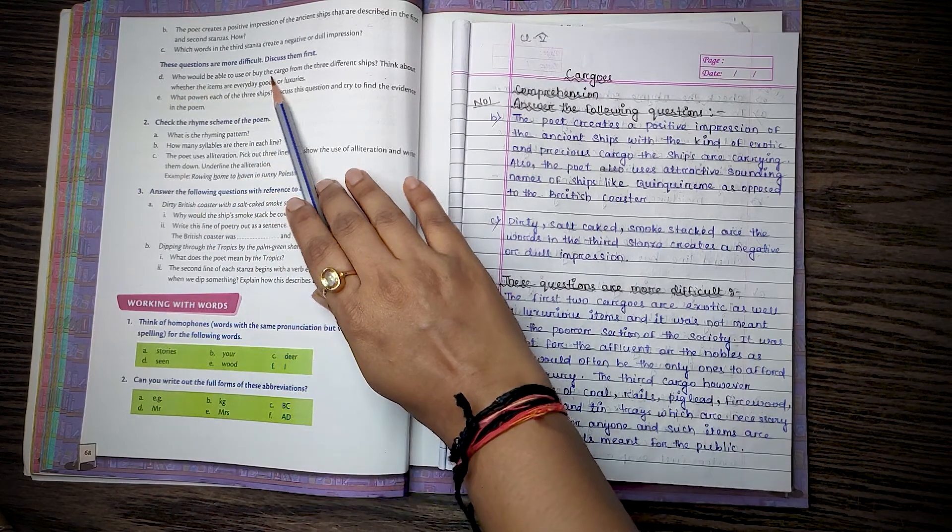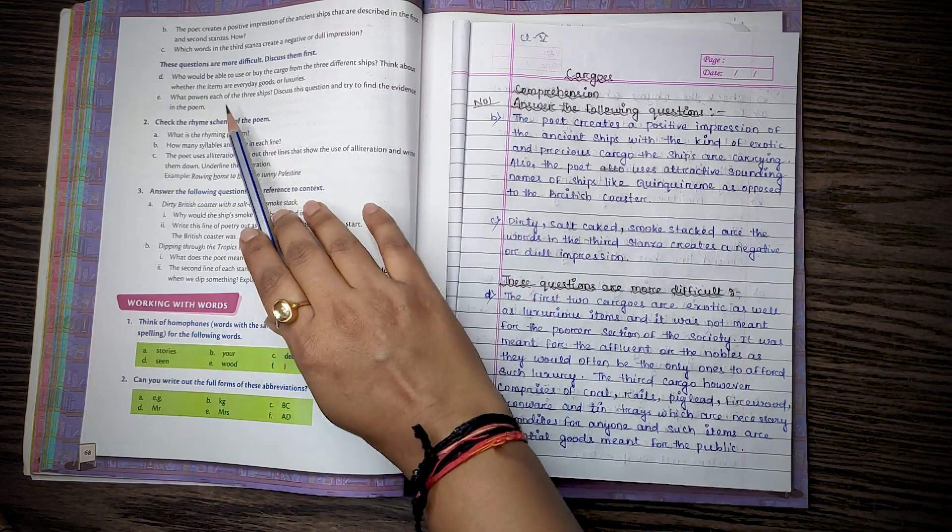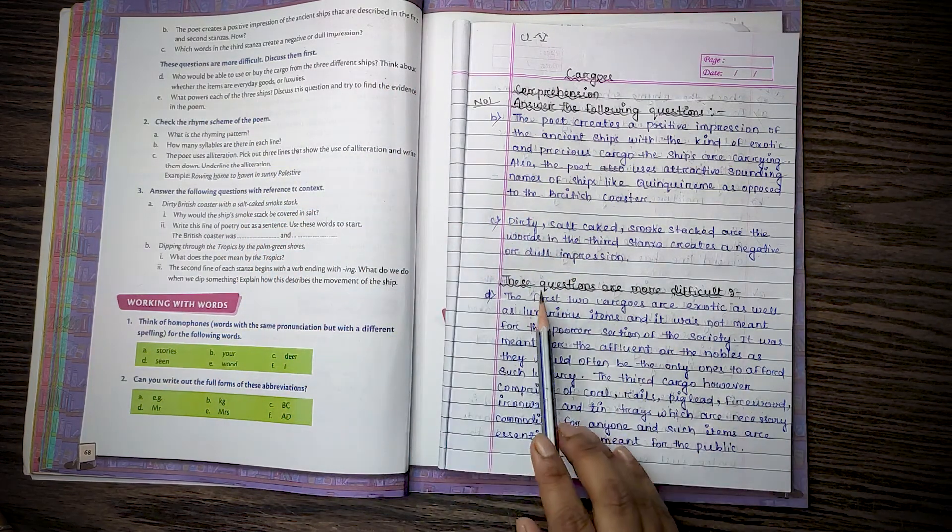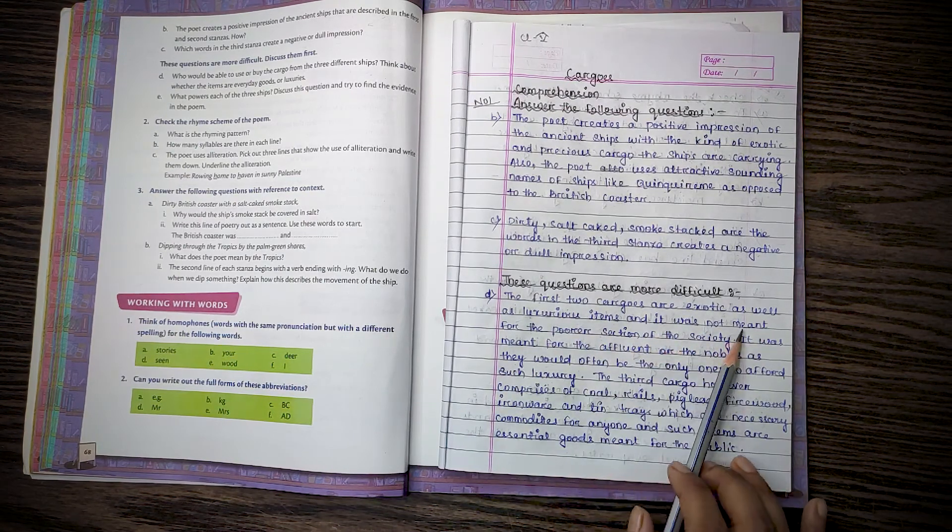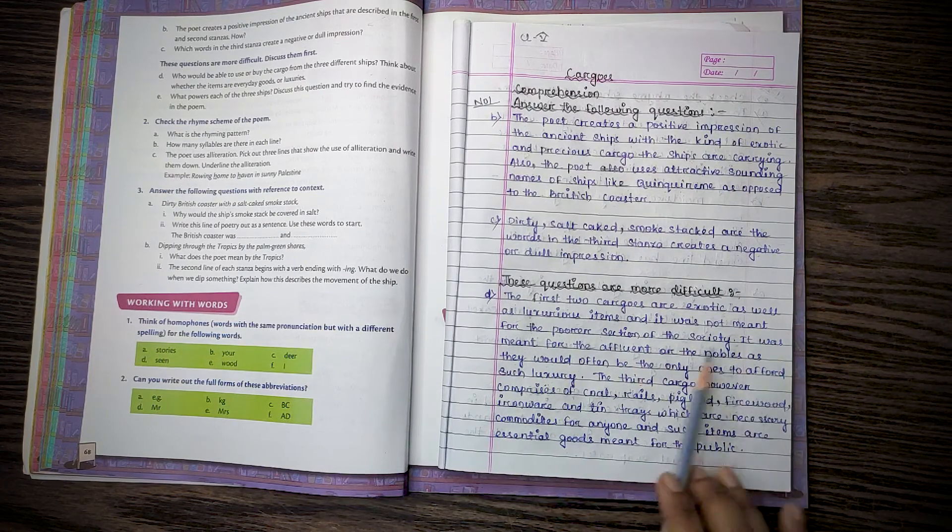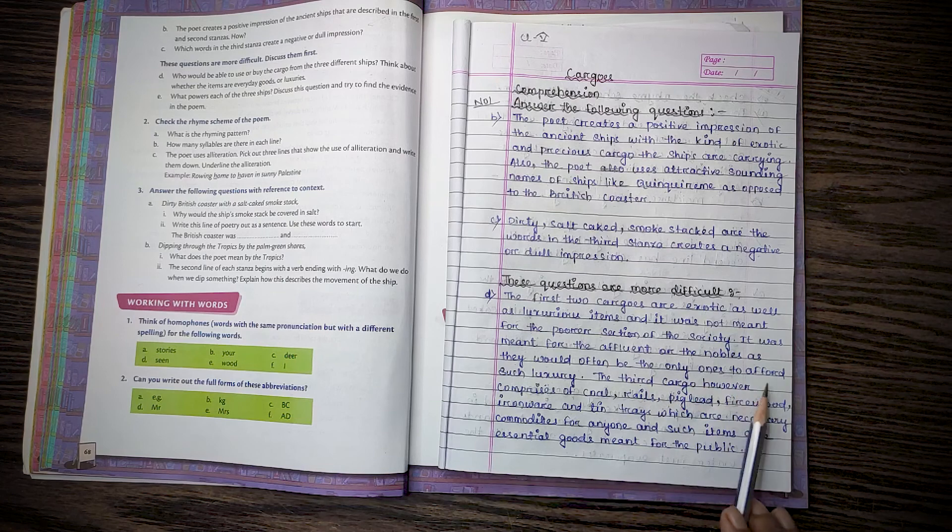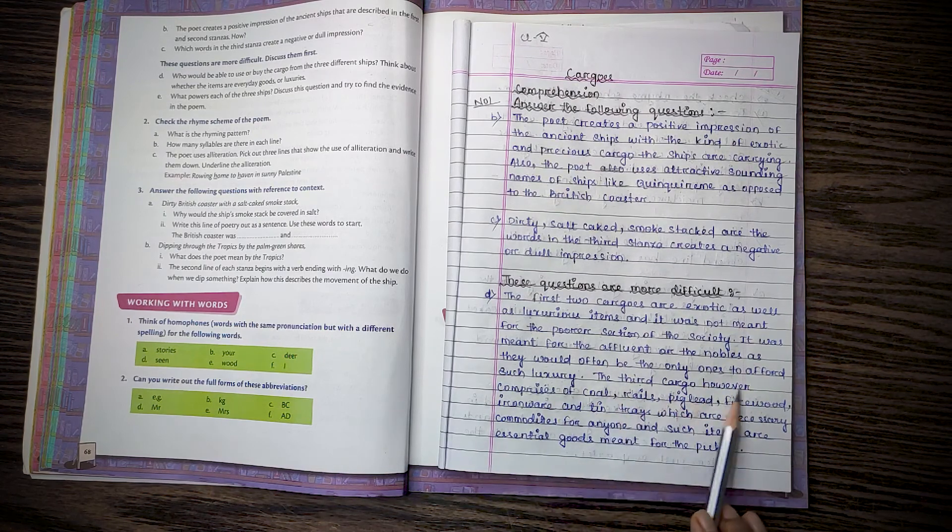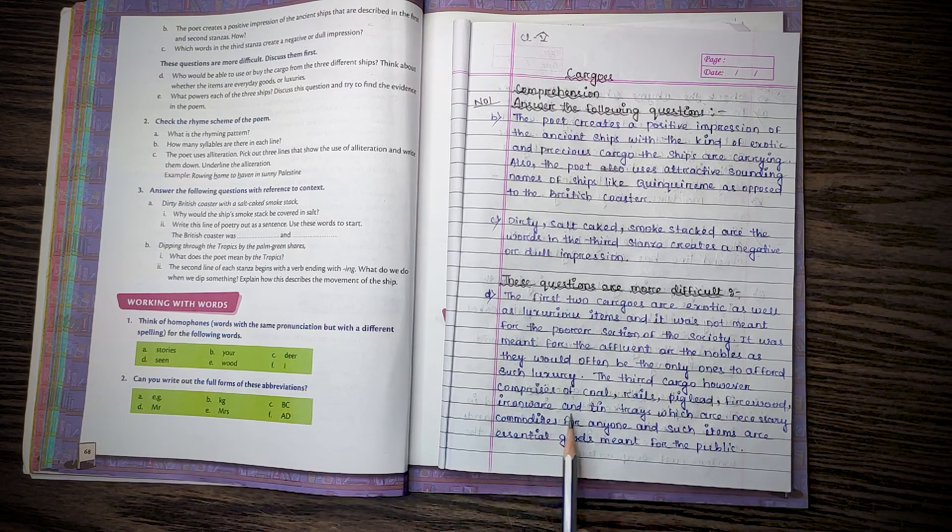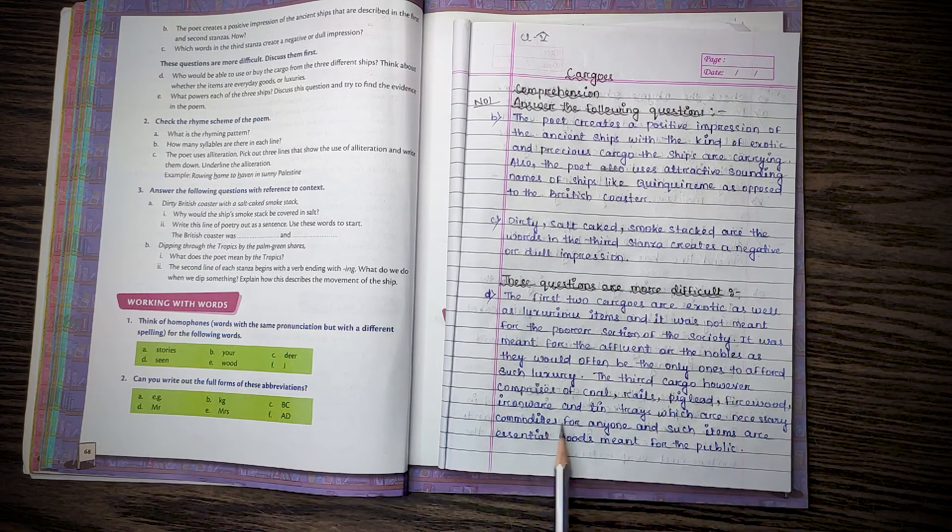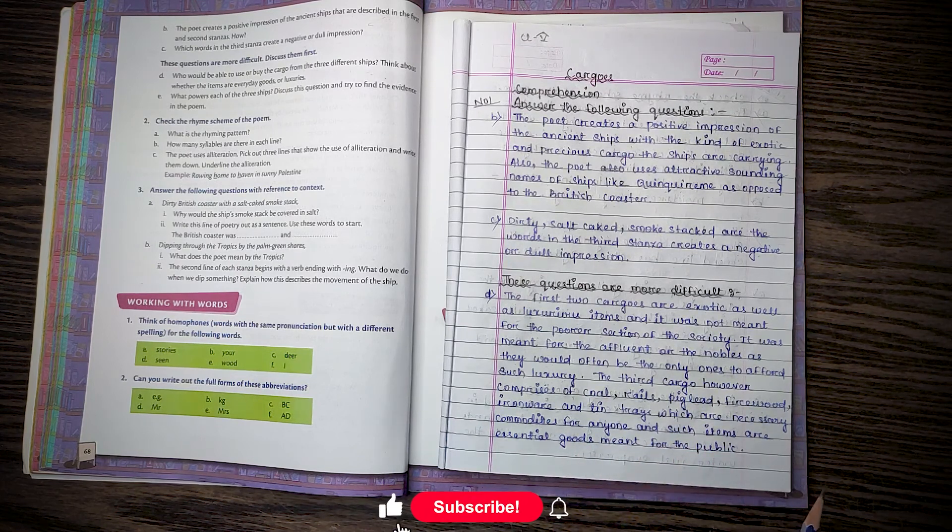Then D. Who would be able to use or buy a cargo from the three different ships? Think about whether the items are everyday goods or luxurious. The first two cargoes are exotic as well as luxurious items and it was not meant for the poorer section of the society. It was meant for the affluent or the nobles as they would often be the only ones to afford such luxury. The third cargo, however, comprises of coal, rails, piglet, firewood, ironware, and tin trays which are necessary commodities for anyone and such items are essential goods made for the public.